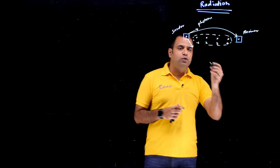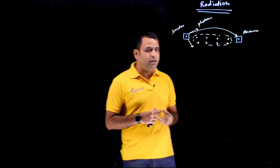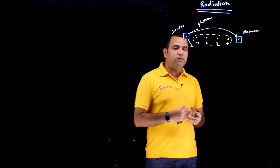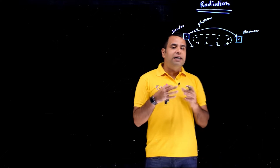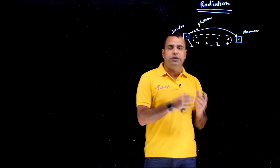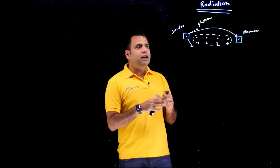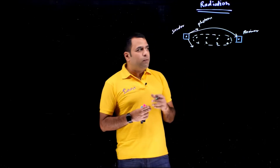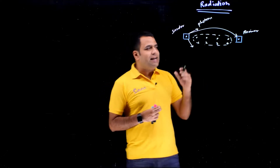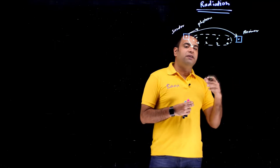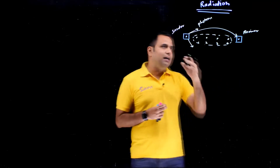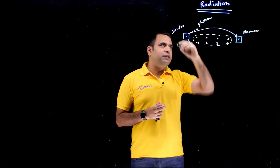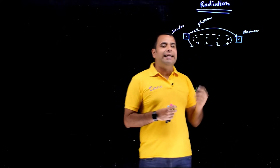In case of radiation, the sender throws energy directly to the receiver. There is no need to achieve equilibrium or steady state first — unlike conduction or convection. From the very beginning, the sender throws the energy and the receiver receives those packets. This flow of energy from sender to receiver is known as radiation.